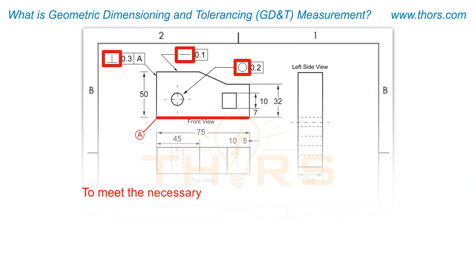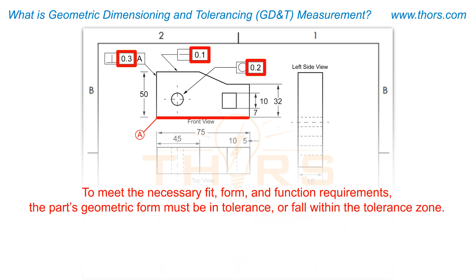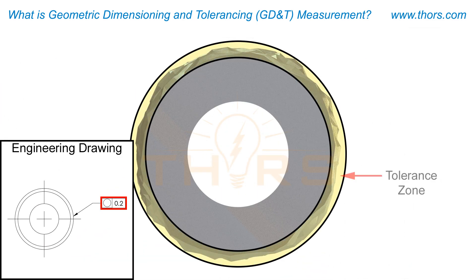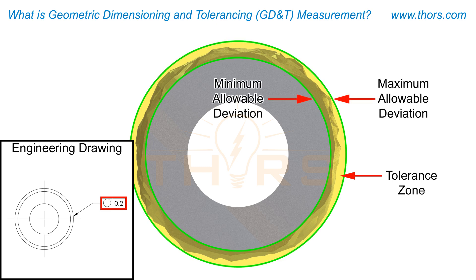To meet the necessary fit, form, and function requirements, the part's geometric form must be in tolerance, or fall within the tolerance zone. A tolerance zone is a defined region around a geometric form that is determined by the maximum and minimum allowable deviations permitted within a specific design or function.